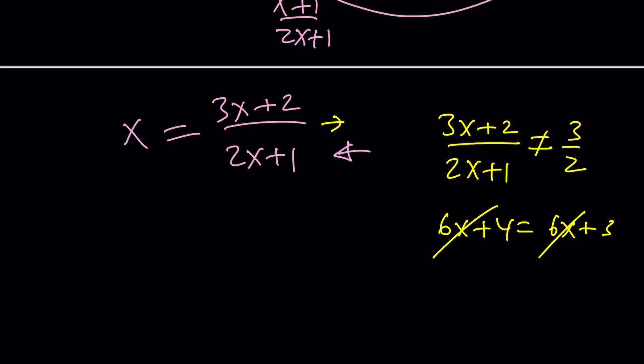So let's go ahead and solve this problem. Cross-multiply: 2x squared plus x equals 3x plus 2. Let's bring everything to the same side. 2x squared minus x minus 2 equals 0.